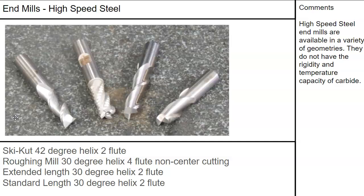Some different high-speed steel end mills: a 45-degree helix roughing cut breaks the chip into smaller chips, while a standard will make a longer stringer chip. A 30-degree helix with a little more flute length is another option. There's a ski cut roughing with 30-degree, an extended length 30-degree, and then standard length. Because they generate different harmonics and have different cutting capabilities, they'll achieve different results.